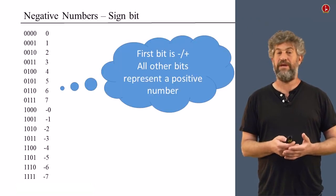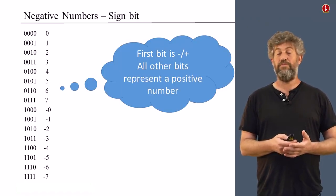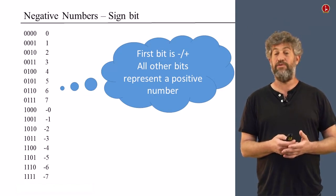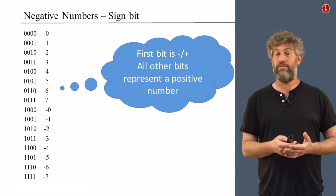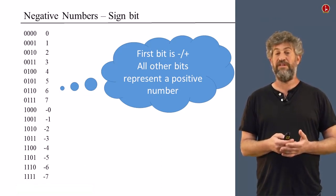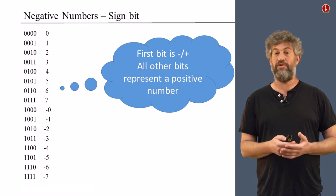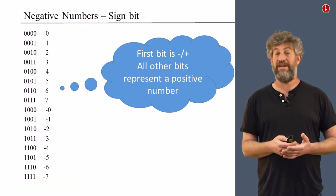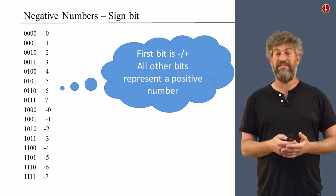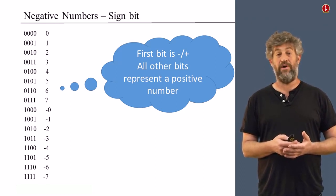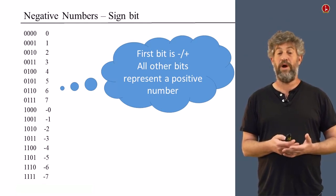The simplest thing you may consider, and it was used at sometimes, was to basically take the first bit and use it as a sign bit. Then you have three more bits or n minus 1 more bits in general to represent the actual number. If it starts with 0, it's going to be a positive number. If the first bit is 1, then it's going to be a negative number represented by the next three bits. In this case, we can represent 0, 1, 2, all the way up to 7, and then negative 0, negative 1, all the way up to negative 7.